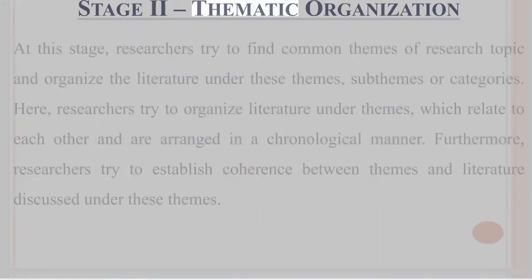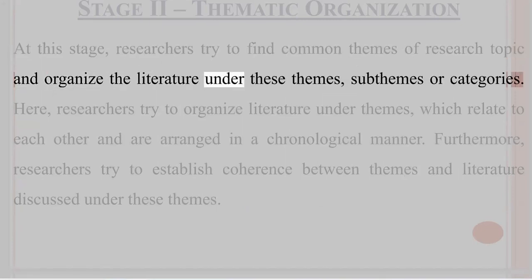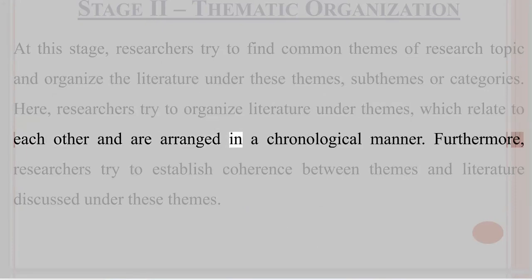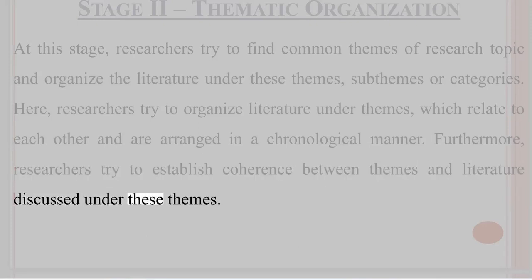Stage 2: Thematic Organization. At this stage, researchers try to find common themes of the research topic and organize the literature under these themes, sub-themes, or categories. Researchers try to organize literature under themes which relate to each other and are arranged in a chronological manner. Furthermore, researchers try to establish coherence between themes and the literature discussed under these themes.